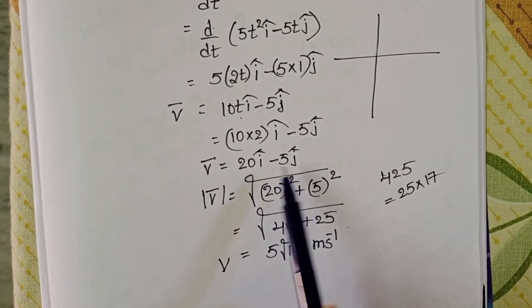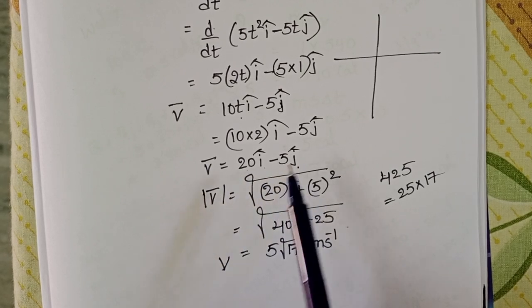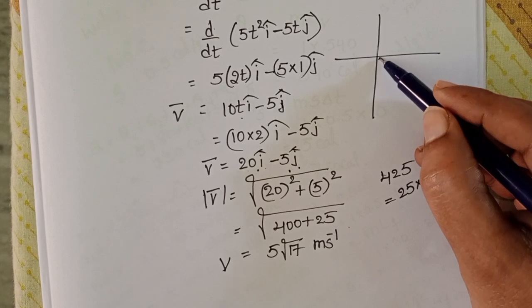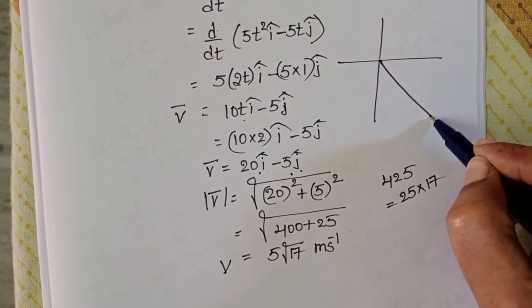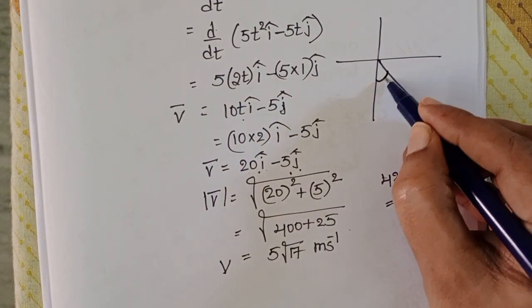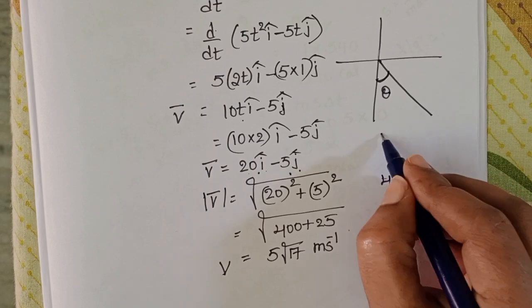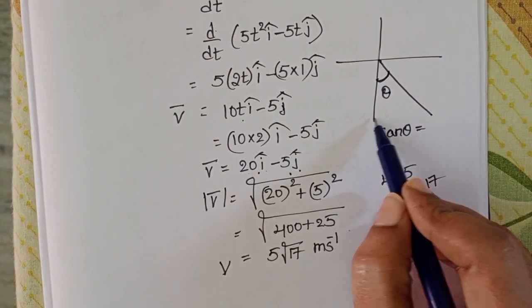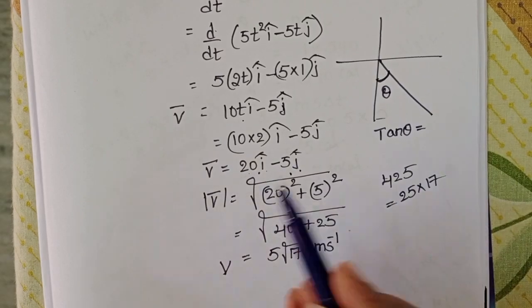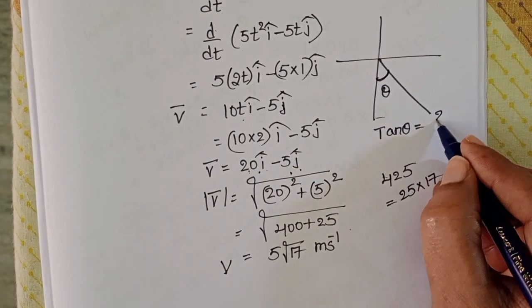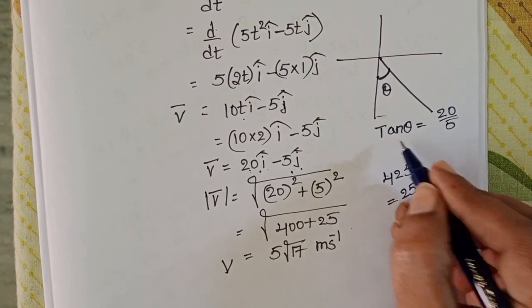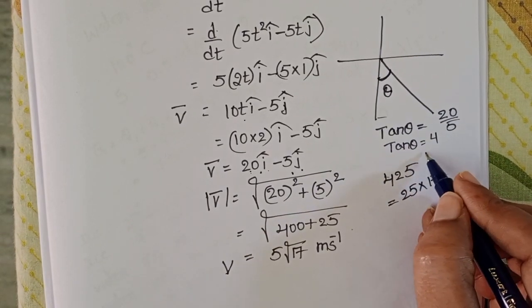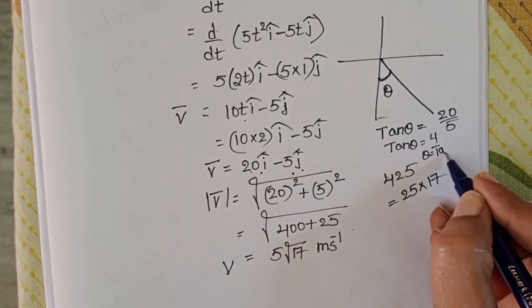The velocity vector is 20 i cap minus 5 j cap. Since x is positive and y is negative, the velocity vector lies in the 4th quadrant. Taking angle theta, tan theta equals opposite side by adjacent side. Here the opposite side corresponds to the x-component: 20 by 5, so tan theta equals 4, giving theta equals tan inverse 4.